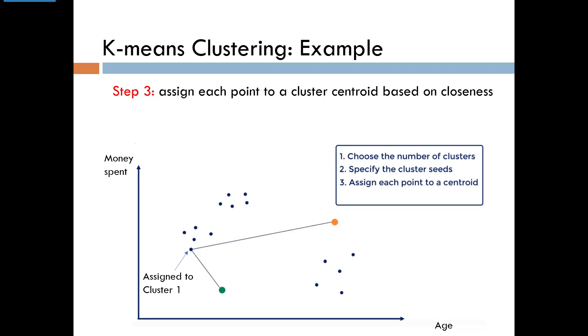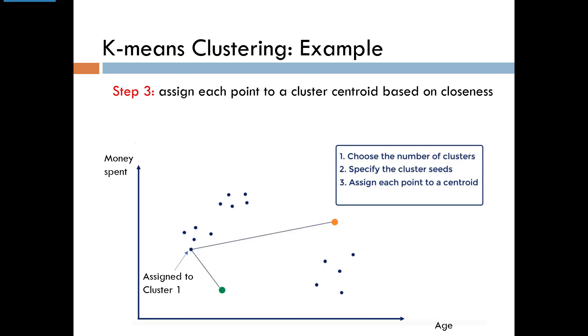In step 3, assign each data point to the cluster centroid that it is closest to. For example, the data point on the bottom left side is closer to cluster 1 centroid, so it is assigned to that cluster. This data point on the right is closer to cluster 2 centroid, and so it is assigned to that cluster.